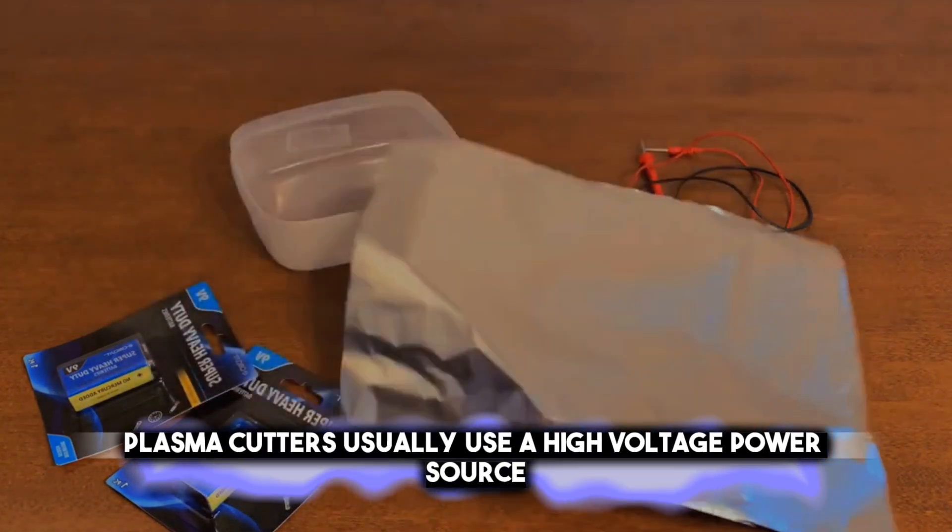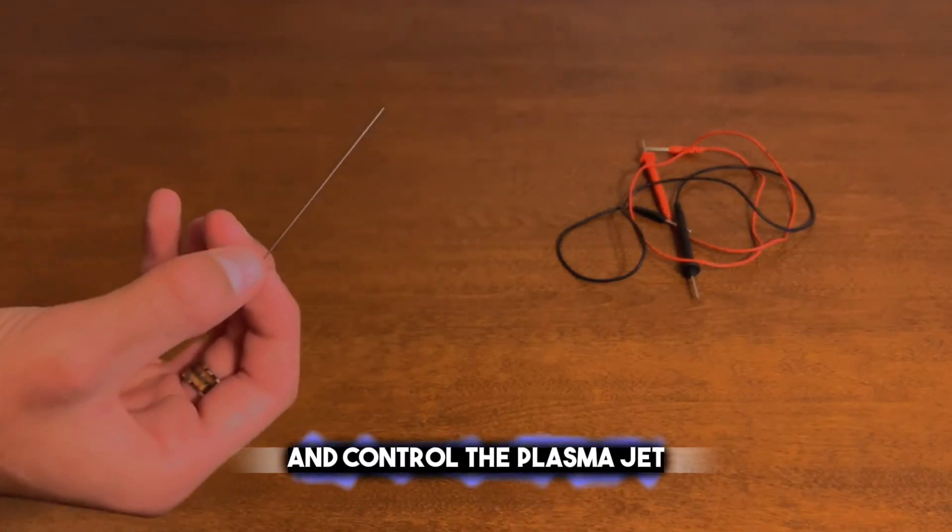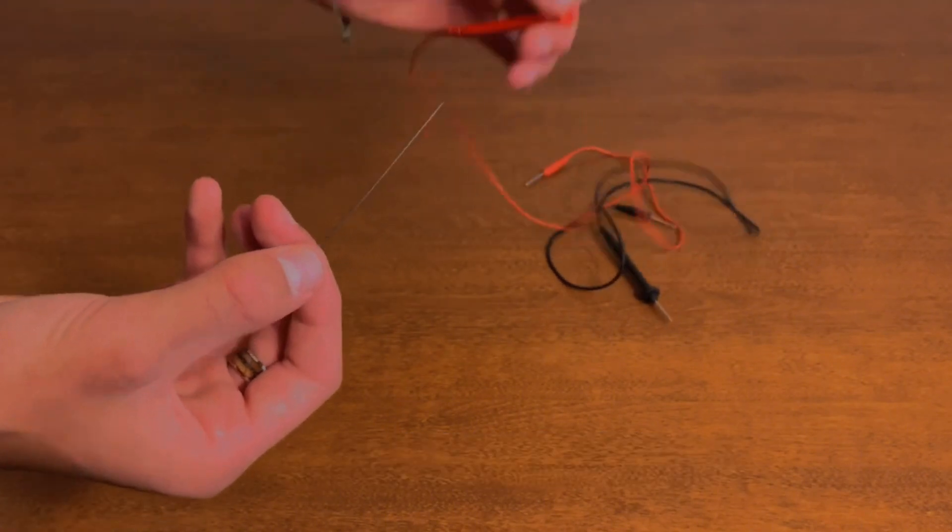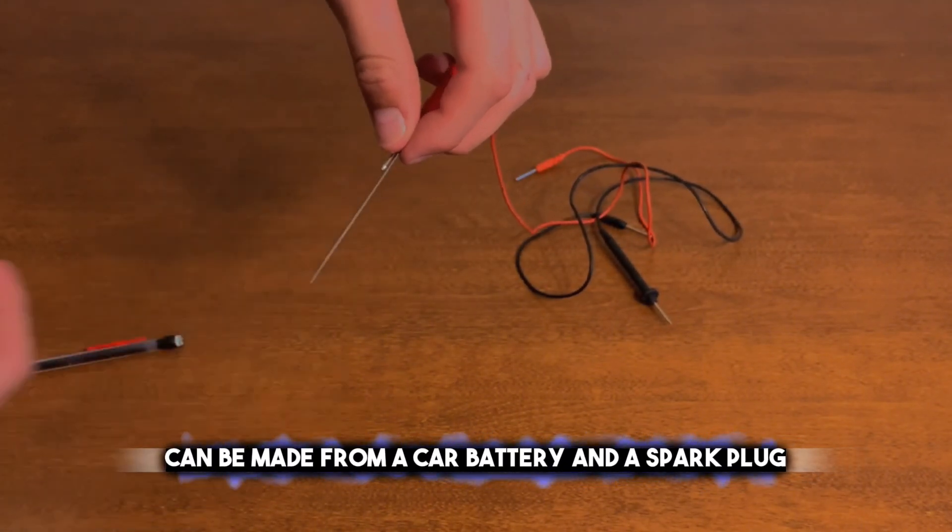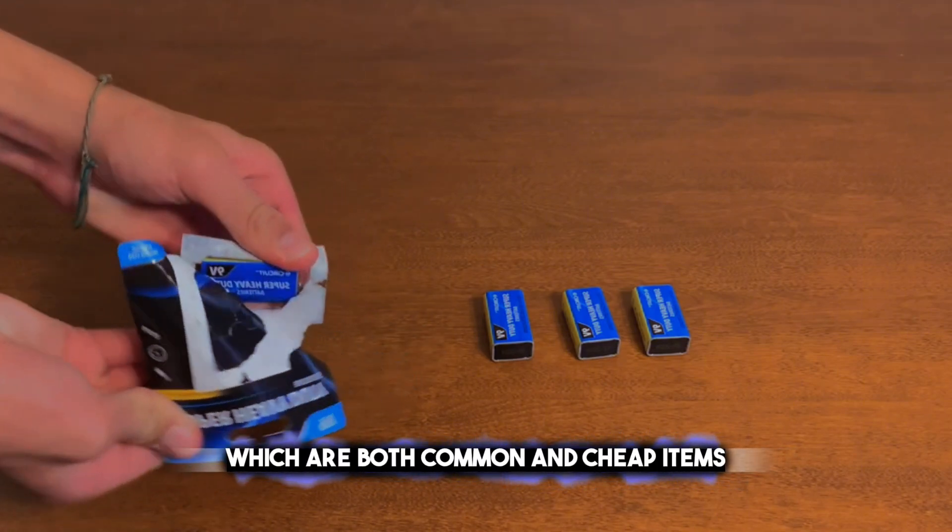Plasma cutters usually use a high-voltage power source and a compressed gas to create and control the plasma jet. A plasma cutter can be made from a car battery and a spark plug, which are both common and cheap items.